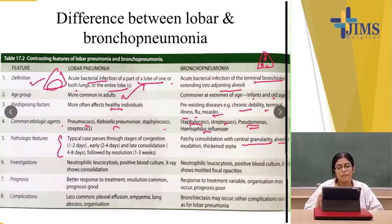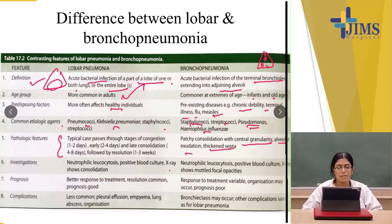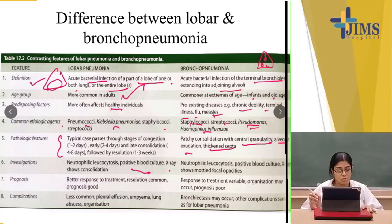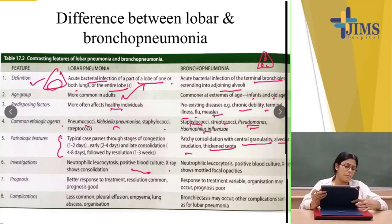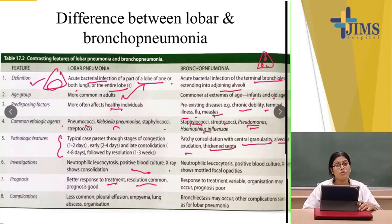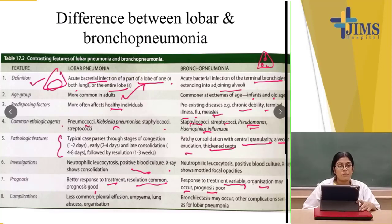Pathologically, lobar pneumonia goes through four phases: congestion, red hepatization, gray hepatization, and resolution. In bronchopneumonia, patchy consolidation with central granularity, alveolar exudate, and thickened septa all appear at the same time. For investigations, both will show neutrophilic leukocytosis and positive blood culture taking about three days, so empirical antibiotics must be started. Prognosis: lobar pneumonia has better prognosis with resolution most common; bronchopneumonia has variable response to treatment, organization may occur, and prognosis is poorer. Complications are less common in lobar pneumonia but more common in bronchopneumonia.